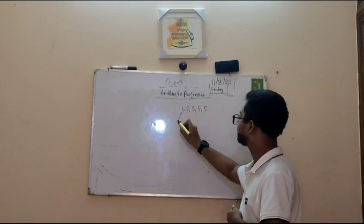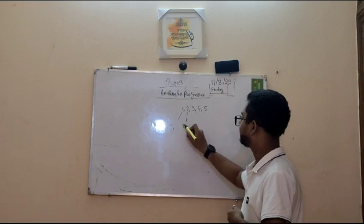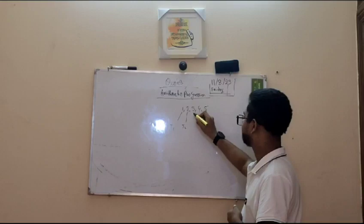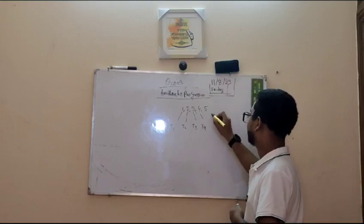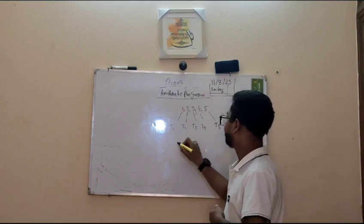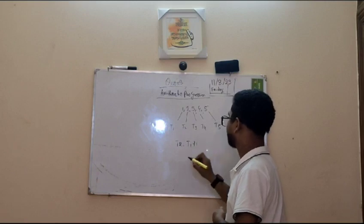It's increasing. How many terms are here? There are five terms. This is T1, this is T2. T represents terms. So, T1, T2, T3, T4 and T5. We can say that T2 is equals to T1 plus 1.